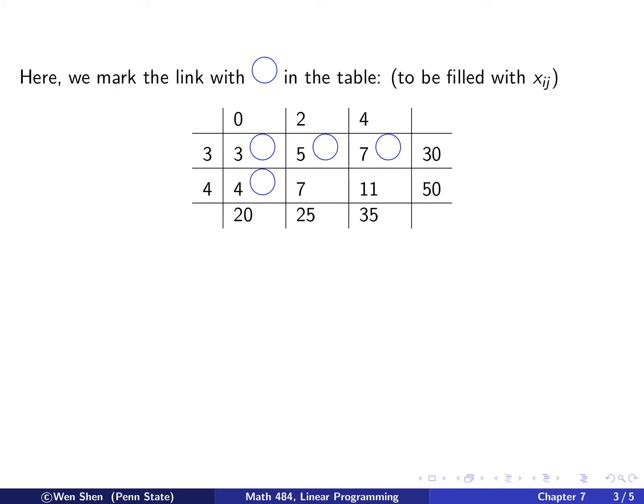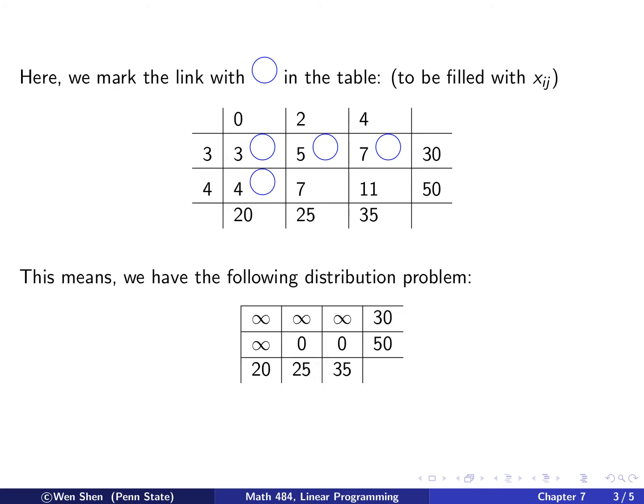Now go to row 2. For this position, 4 plus 0 is 4, so this is linked. And then here, 4 plus 2 is 6, which is strictly less than 7, so this is not linked. And 4 plus 4 is 8, less than 11, so this is not linked. And those that are not linked, I do not put a big circle.